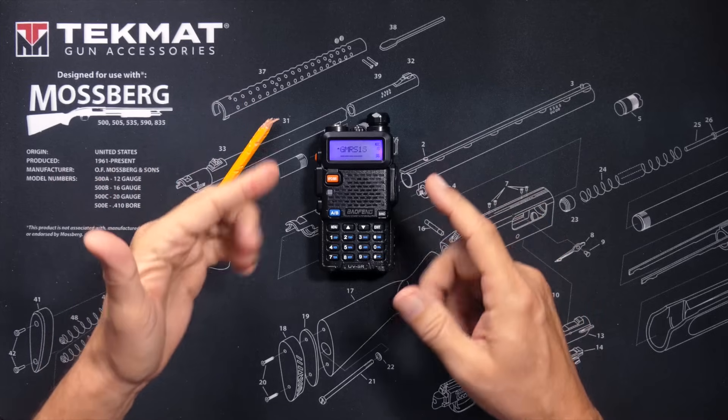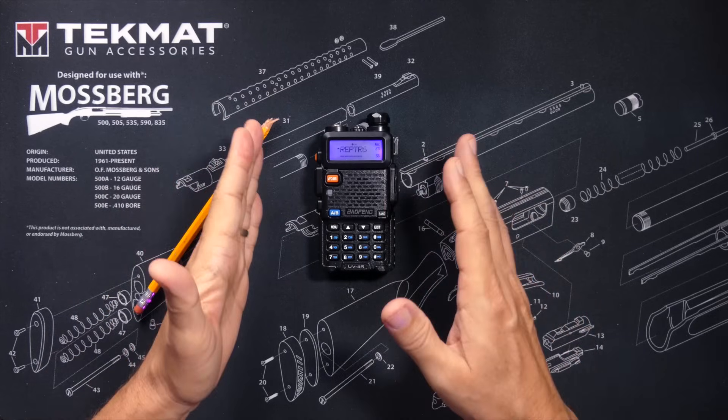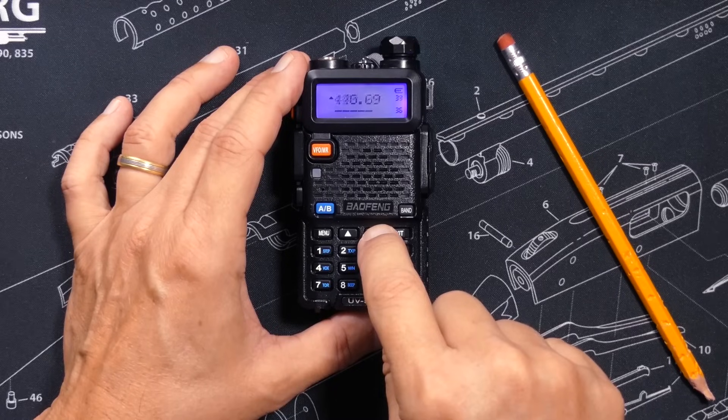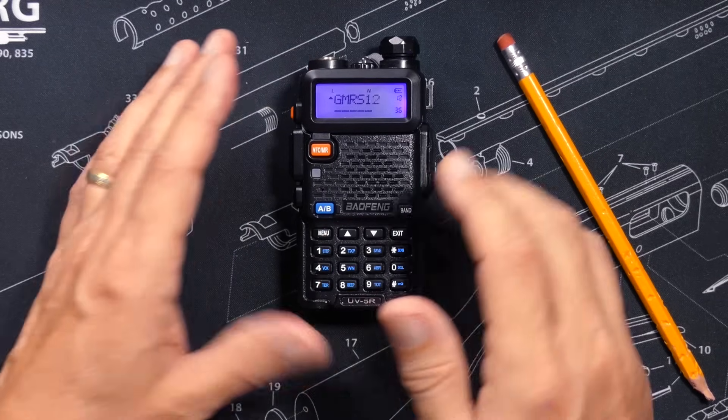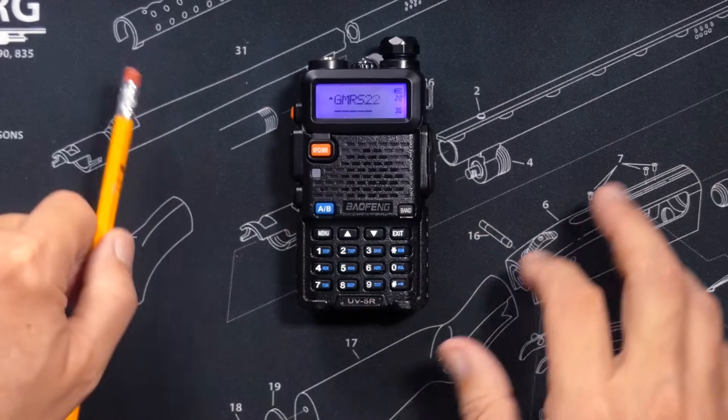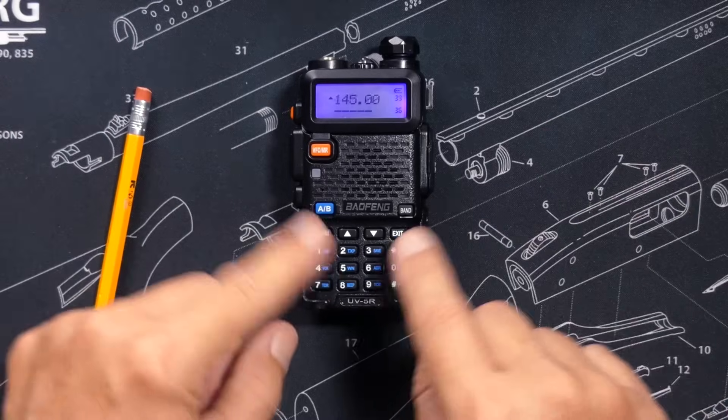While the radio is scanning, you can change the direction of the scan up or down by hitting the up or down arrow buttons. And you can stop the scan at any time by pressing any button on the keypad.